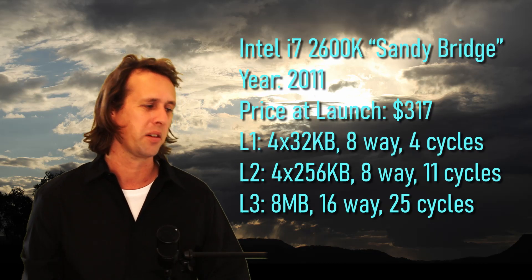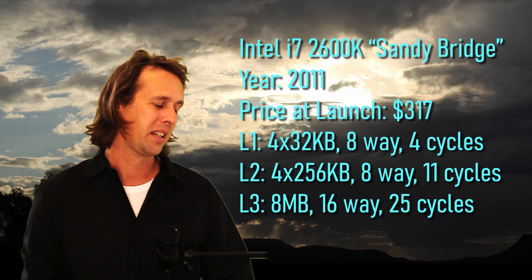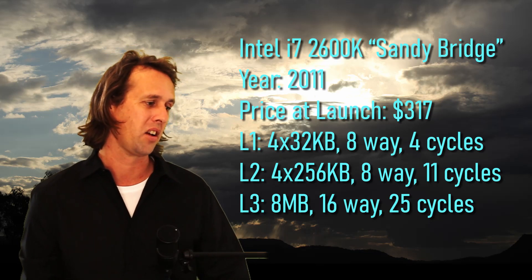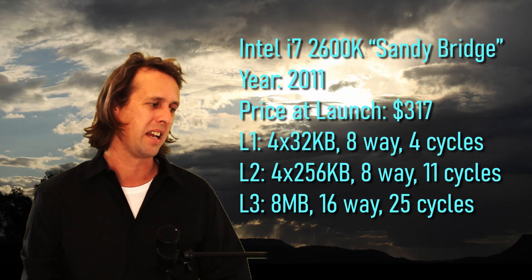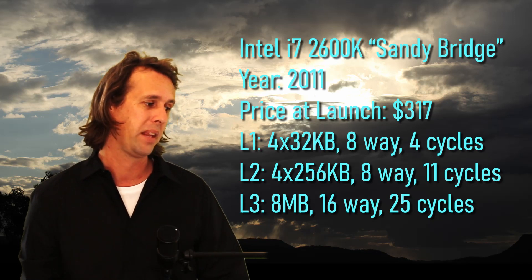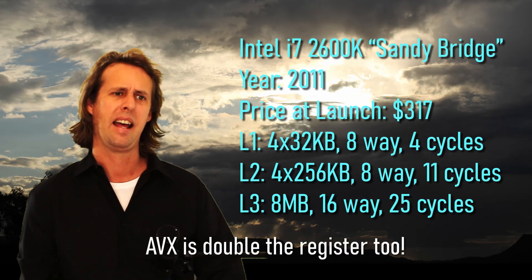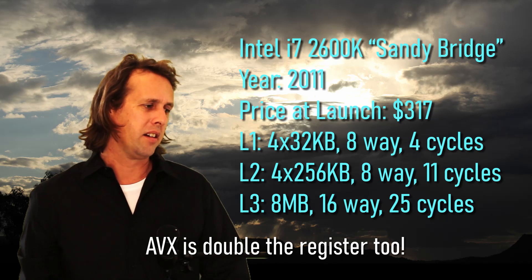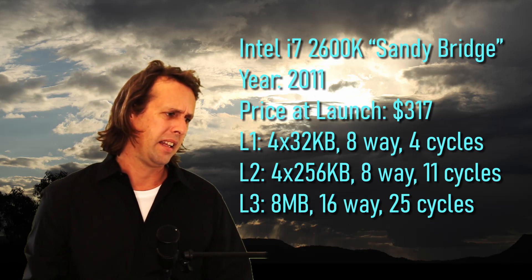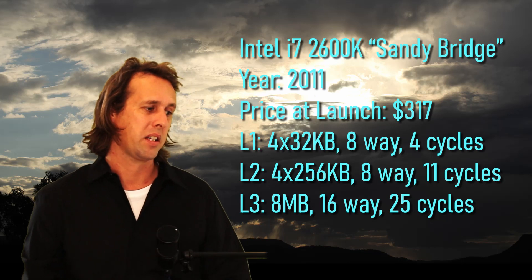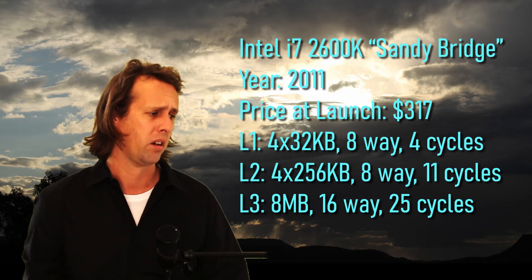The Intel i7-2600K — the famous Sandy Bridge — what a chip. This is from 2011 and was the first chip to have AVX instructions. The L1 contains 32 kilobytes per core, 8-way set associative, and 4 cycle access time. Generally speaking, this Sandy Bridge thrashes the little AMD above it — the L1 is smaller, but the 8-way associativity rather than 2-way leads to a whole lot fewer cache misses. The L2 is 256 kilobytes, 8-way set associative, and 11 cycles. The L3 of the Sandy Bridge was 8 megabytes, 16-way, 25 cycles. A lot of people remember it fondly — a bit of a golden era for Intel chips.